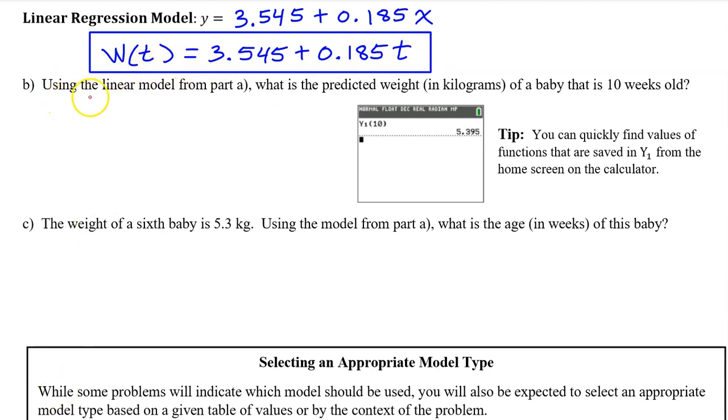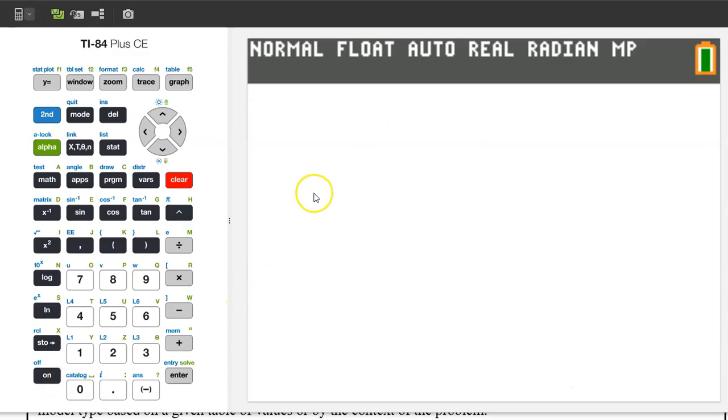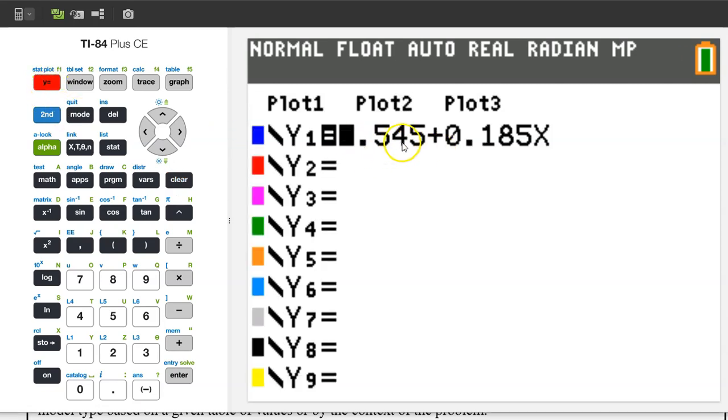Part b, using the linear model from part a, what is the predicted weight in kilograms of a baby that is 10 weeks old? In other words, we need to find w at 10. When we created the linear regression model, we opted to have the calculator store the regression equation as y1. Let's take a look. Hit y equals. See, here's your regression equation right here.